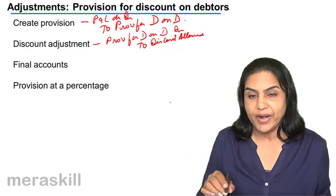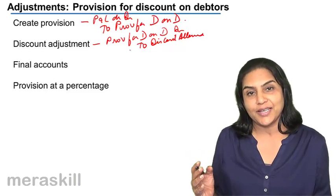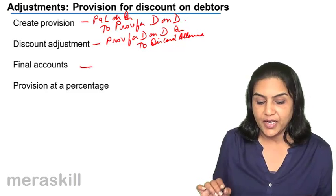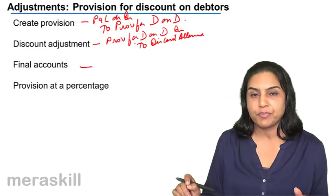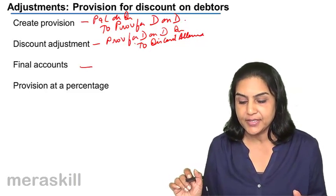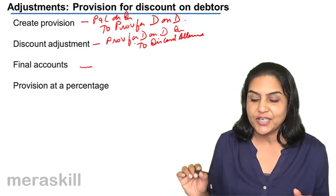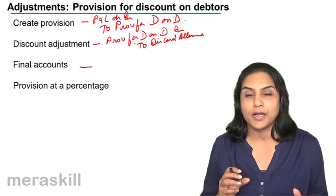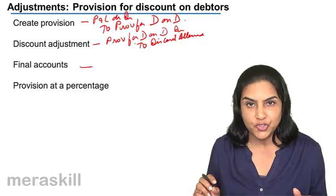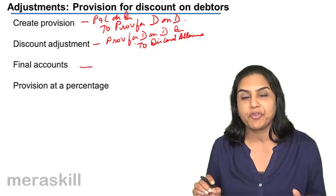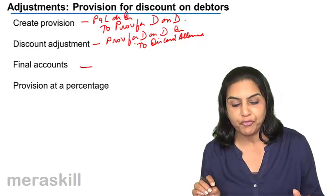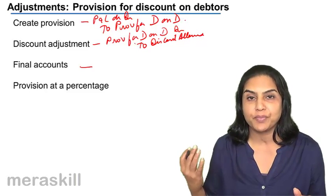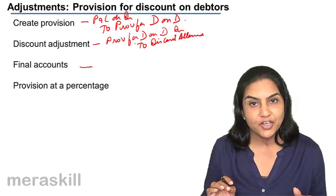Further provision, if required, is created; or if there is excess provision, it may be returned back. In the final accounts, the discount is adjusted against the provision for discount on debtors. The amount of provision is reduced, and we compute how much additional provision needs to be created and debit the profit and loss account with that amount — profit and loss account debit to provision for discount on debtors. If it has to be written back, the entry is reversed.